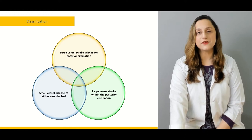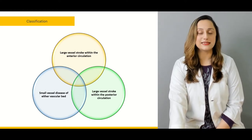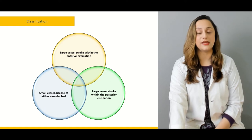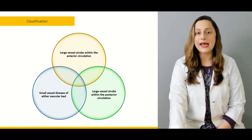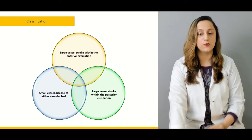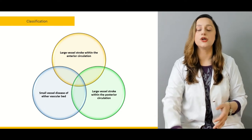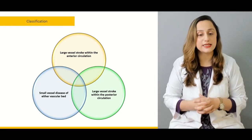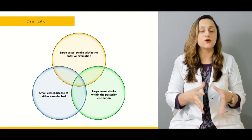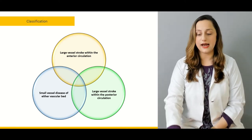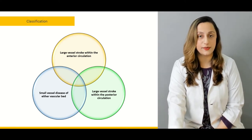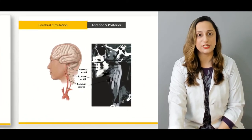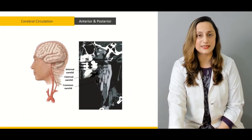Mainly the classifications encompassing the ischemic stroke are the large vessel stroke within the anterior circulation, the large vessel stroke involving the posterior circulation, or a variant which is the small vessel disease of either the anterior circulation or the posterior circulation.